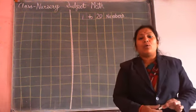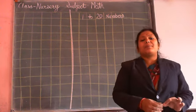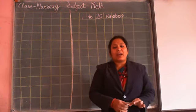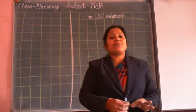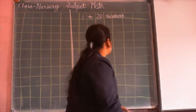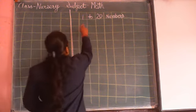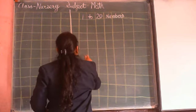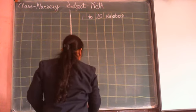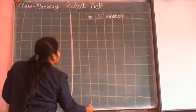So write with me. I hope you write properly. Aap sabhi ko likhna aagya honga. So write with me. Numbers from 1 to 20. See here.